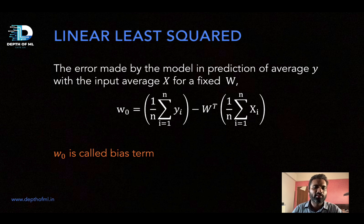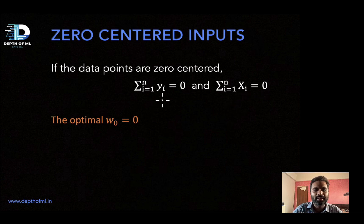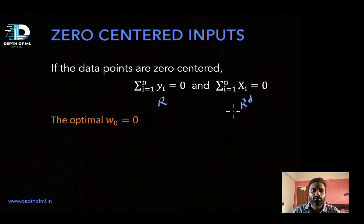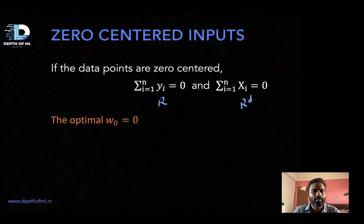Small w_0 is also called the bias term. If input data points are zero-centered — meaning the sum of all y_i is zero and the sum of all feature vectors is also zero — then the optimal small w_0 will be zero. Because in the formula, both sums are zero, so w_0 = 0 when the training data is zero-centered.